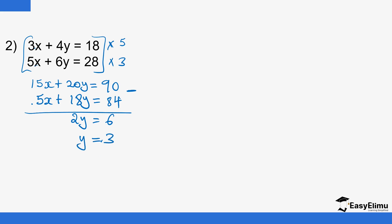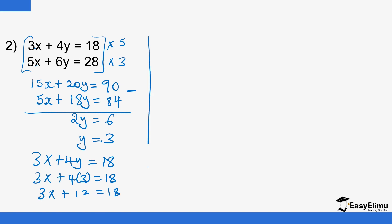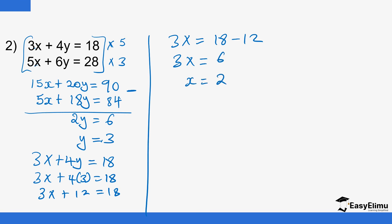So 3x plus 12 equals 18, meaning 3x equals 6. Dividing both sides by 3 gives x equals 2. To verify: 2 times 3 is 6, and 3 times 4 is 12; 6 plus 12 equals 18. That is correct.